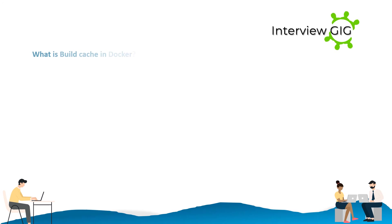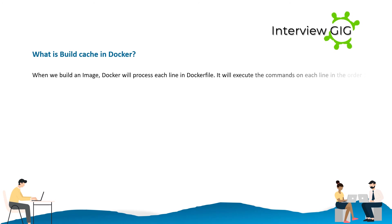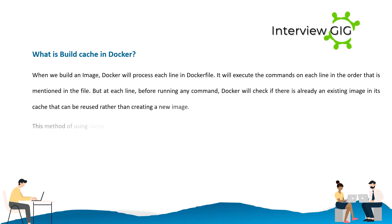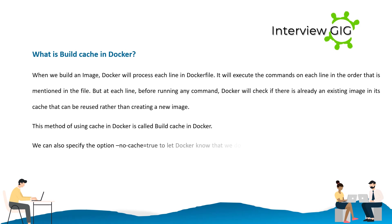What is build cache in Docker? When we build an image, Docker will process each line in the Dockerfile and execute the commands in the order mentioned in the file. But at each line, before running any command, Docker will check if there is already an existing image in its cache that can be reused rather than creating a new image. This method is called build cache in Docker. We can also specify the option --no-cache=true to let Docker know that we do not want to use cache for images. With this option, Docker will create all new images.